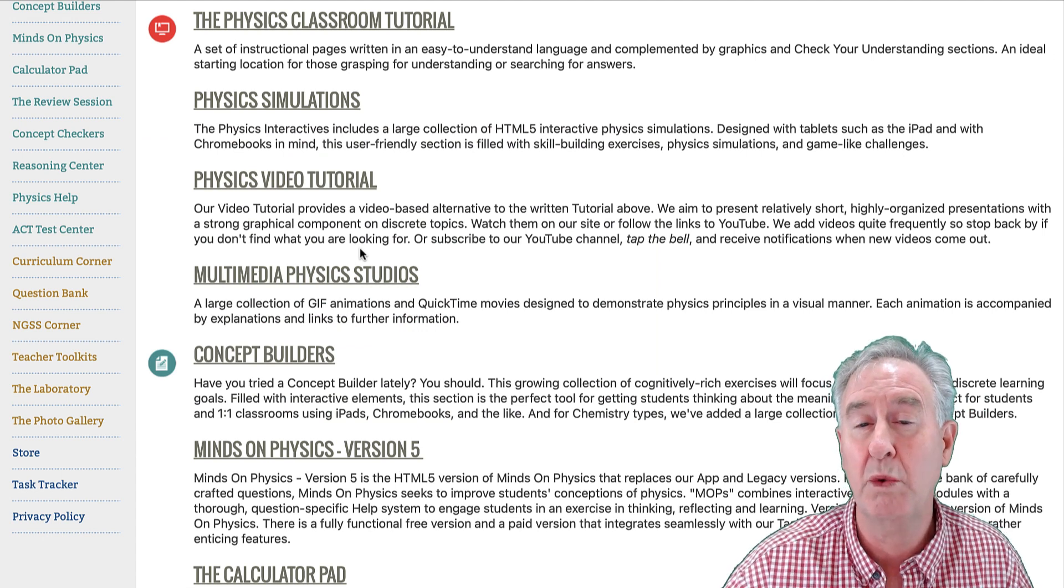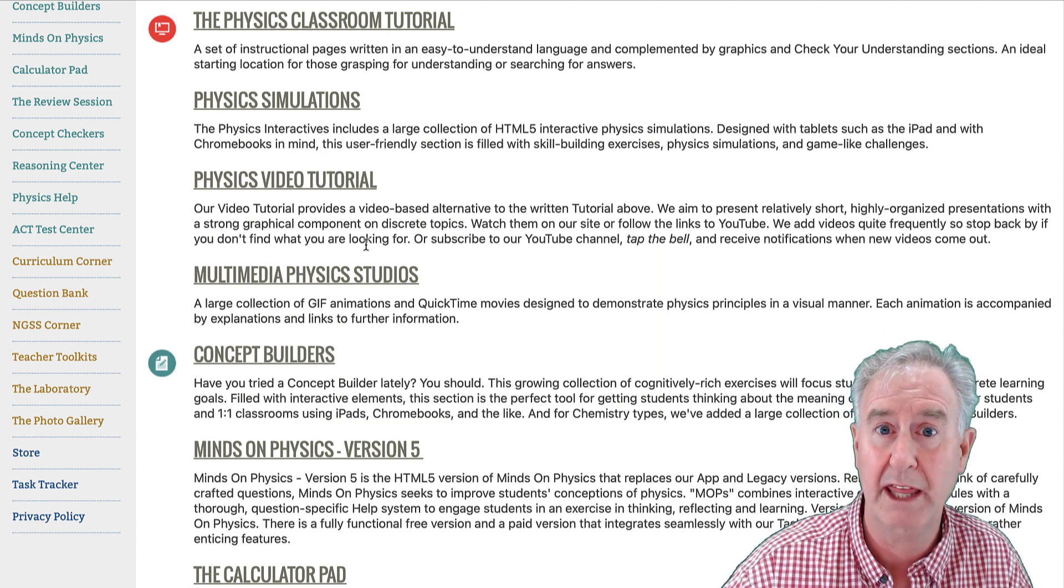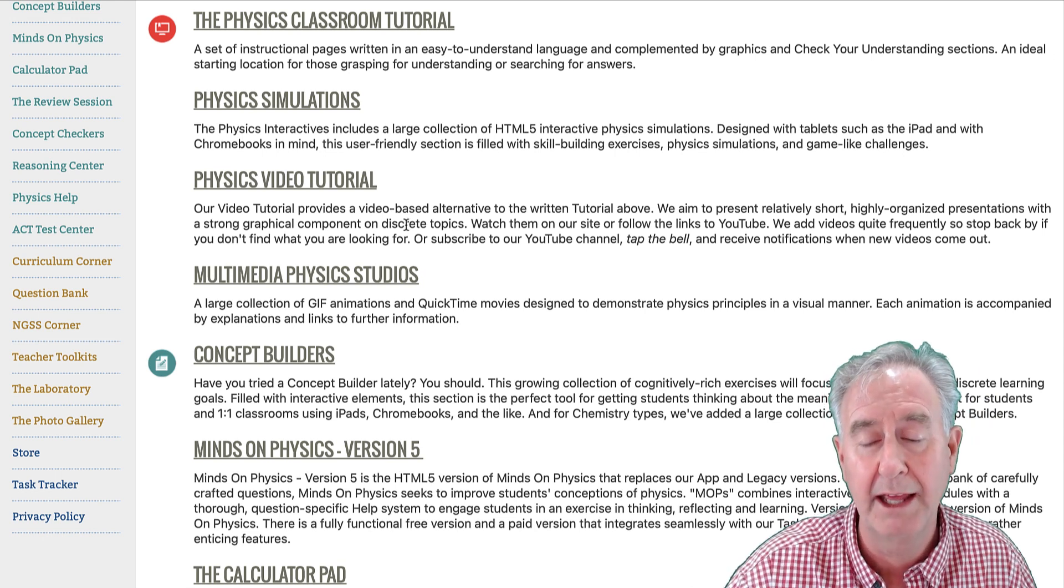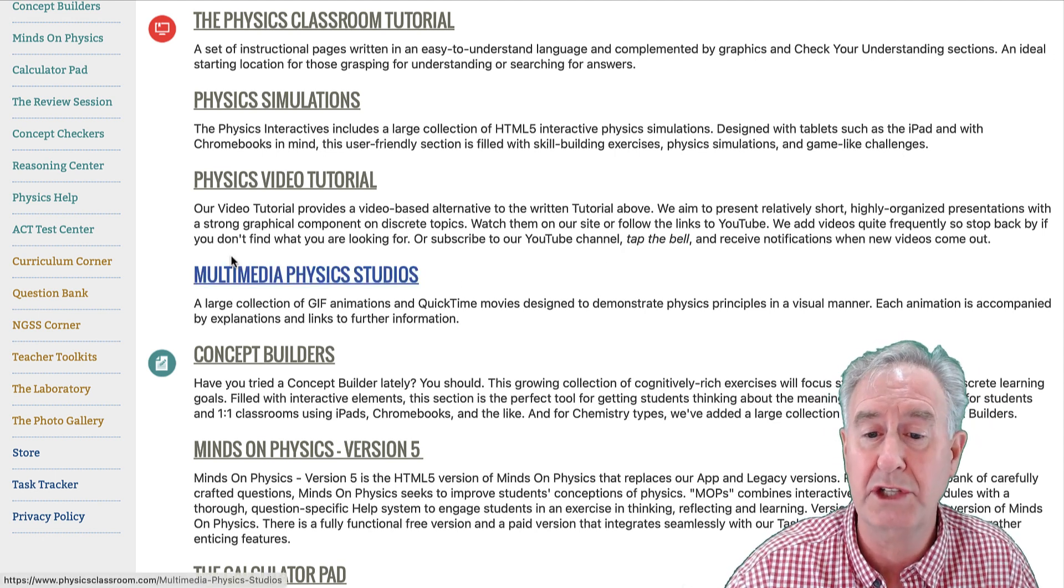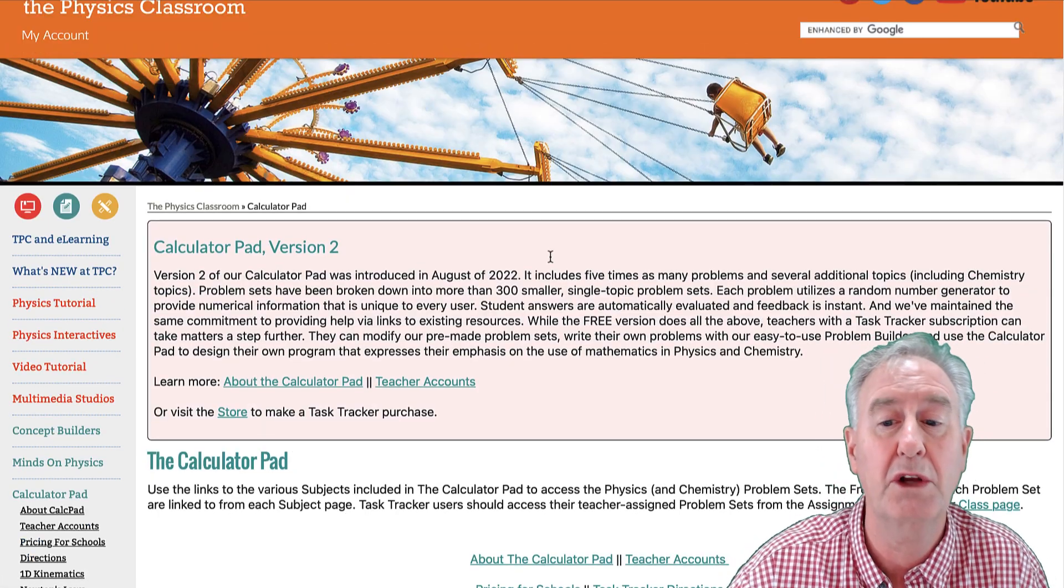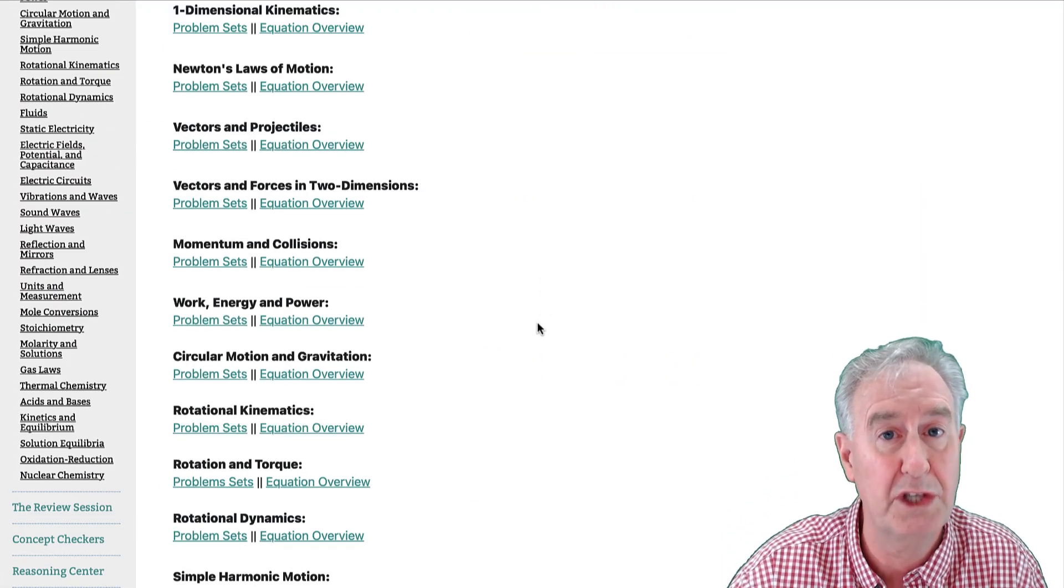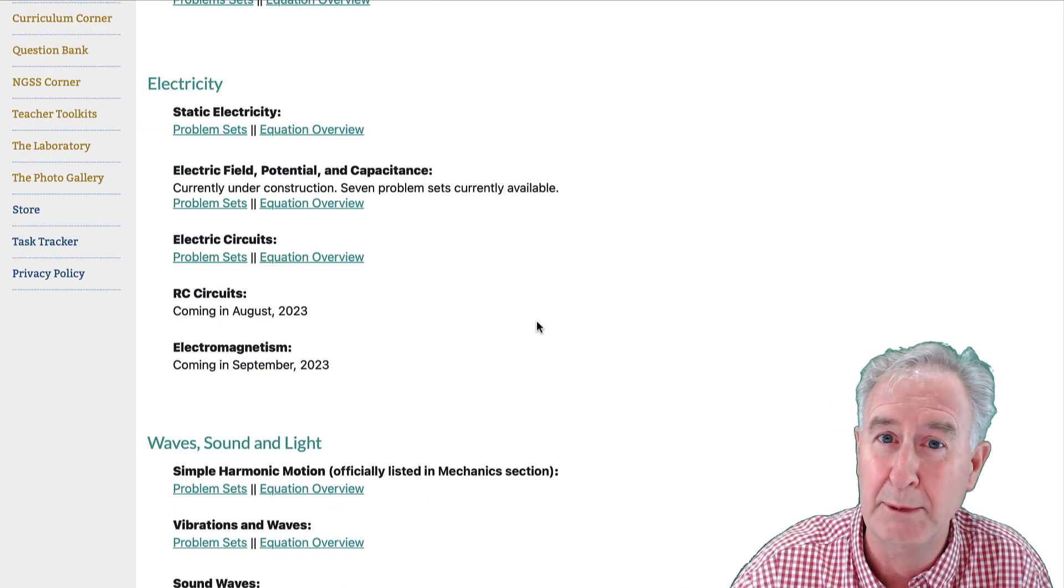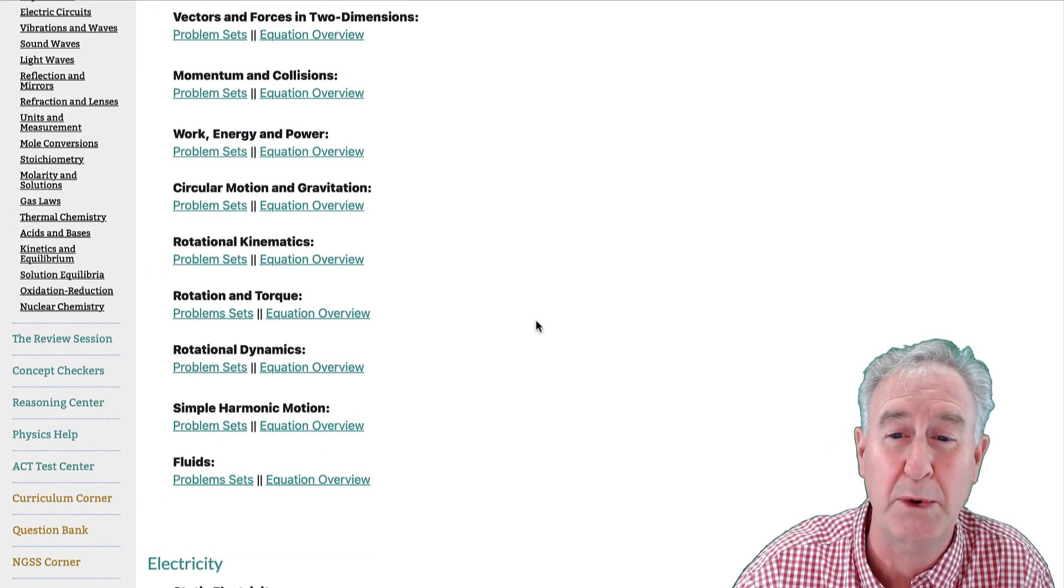Now I'm going to begin by discussing one of several ways, in fact, what I think is the best way to find problems in calculator pad. I'm on the homepage of the physics classroom and I'm going to go to the calculator pad. There you'll see our topics. We have several of them. We have about 2,500 problems and we're still going strong creating more.